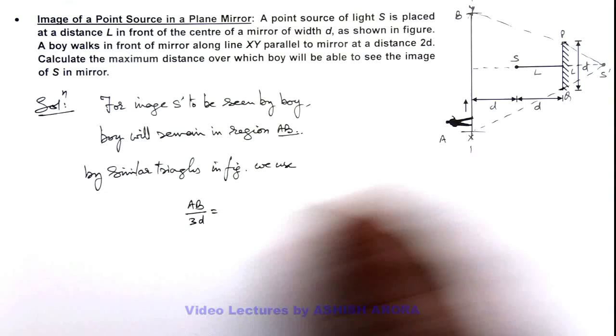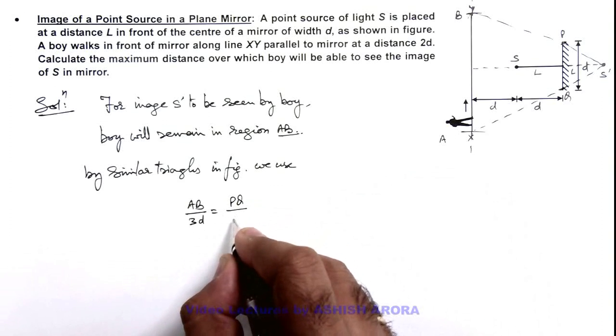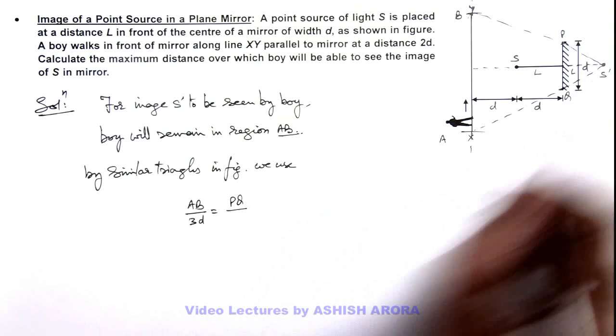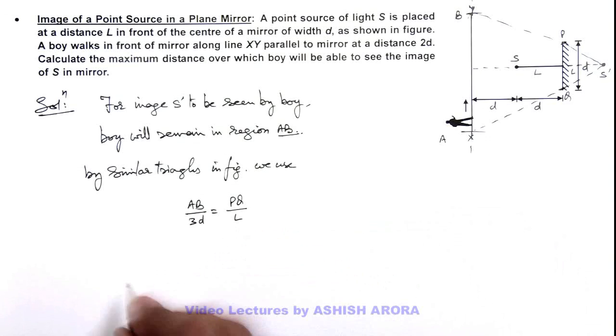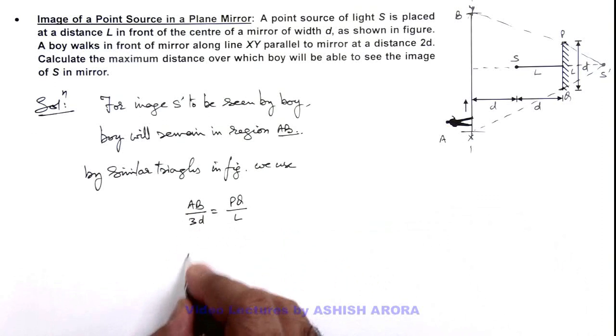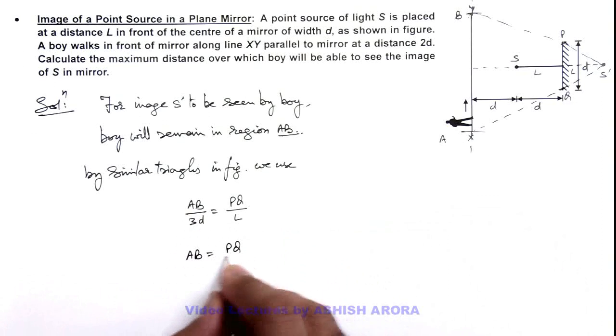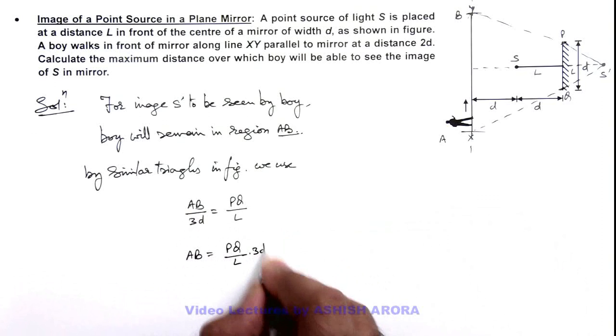And this must be equal to PQ divided by the distance L. So in this situation here we can see the value of AB is equal to PQ by L multiplied by 3d.